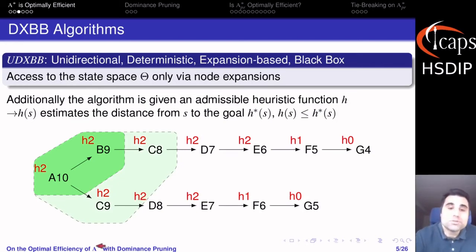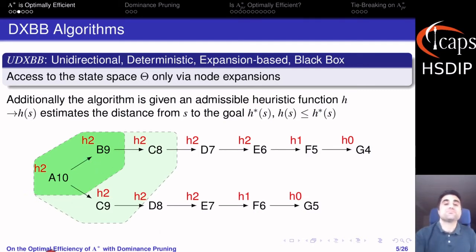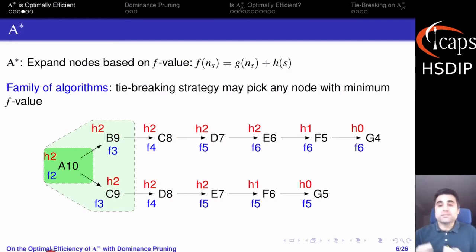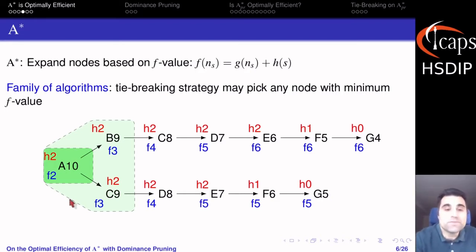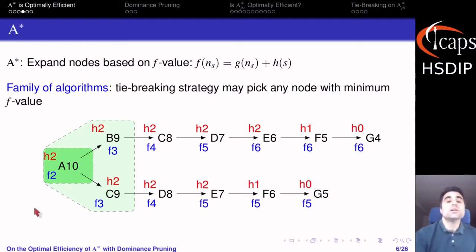In the rest of the talk I'm going to be drawing the entire state space every time, but remember that at any given point the algorithm only knows about the set of states that have been expanded and their immediate successors. What characterizes A-star algorithms is that they expand nodes based on their f value — they will always pick a node with minimum f value to expand. The f value of a node is the distance from the initial state plus the heuristic value. We say this is a family of algorithms because at any given point there might be more than one possible choice.